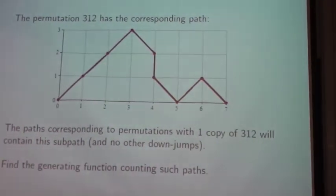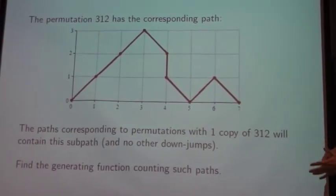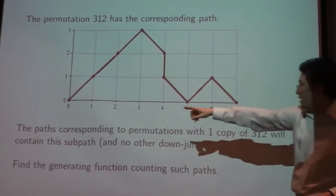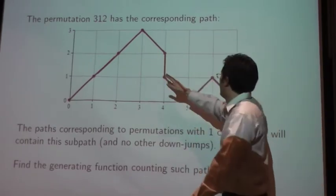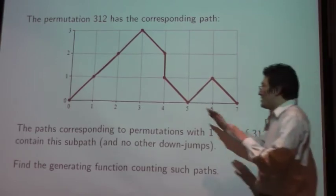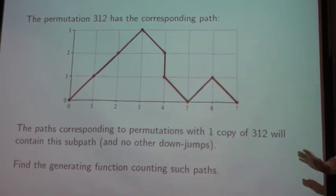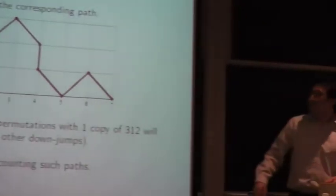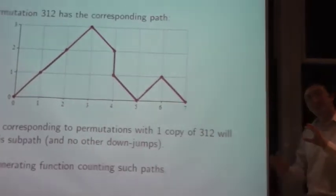So now, as an example, if I take the permutation 3-1-2, obviously it contains exactly one copy of the pattern 3-1-2. This corresponds to this path right here. And the downward steps here correspond to entries in the terms in the permutation. So in a sense, this step here represents the 3, this represents the 1, this represents the 2. And then these downward down jumps, these vertical steps, represent kind of the middle of these 3-1-2 patterns, in a sense.